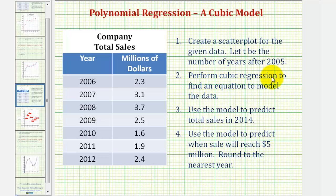Then we'll perform cubic regression to determine an equation to model the data. And then number three, we'll use the model to make a prediction for the sales in 2014. Then number four, we'll use the model to predict when the sales will reach five million dollars. But to begin, it's important to recognize that T is the number of years after 2005.